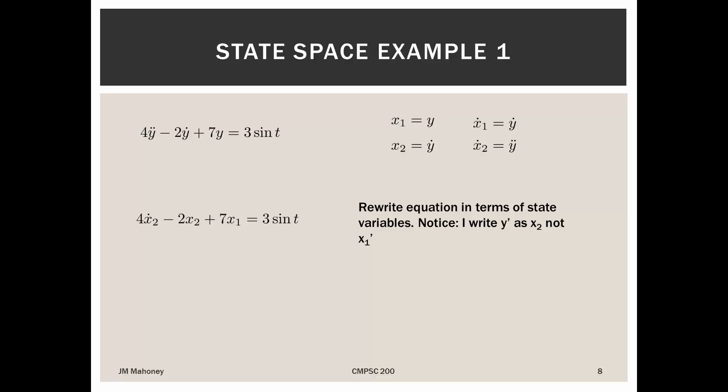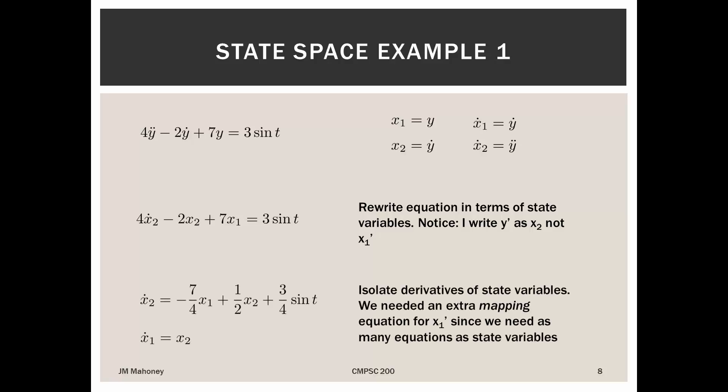I can then take this equation, and my goal is to isolate the one derivative term that I have in it. So I can take all of the terms that are not x2 dot and move them to the right-hand side. In addition, I can then divide through by 4 so that I've isolated x2 dot. So we see that the new right-hand side, I move that 7x1 over, it's now a negative 7. I move the negative 2x2 over, I get a positive 2x2. And the 3 sine t remains there. And then I divide through by 4. So I get an expression for x2 dot. And the right-hand side has only state variables, no derivatives, and it has this function of time.